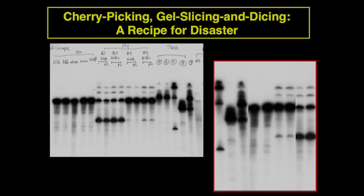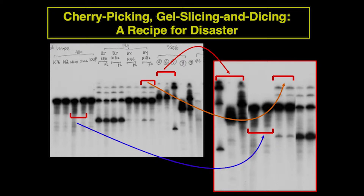The last category is what I call cherry picking, gel slicing and dicing. I took actual data from one of my postdoctoral researchers and constructed this figure myself — he did not fake it, I did, to demonstrate. The original data looks like this. I wanted my gel presented a certain way, so I cut and pasted lanes together. I cherry-picked the lanes I wanted and assembled them into a logical-looking sequence. That is not allowed.